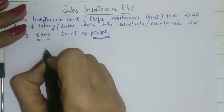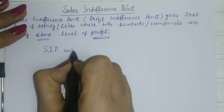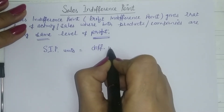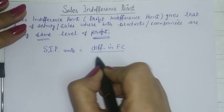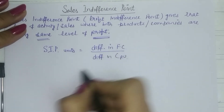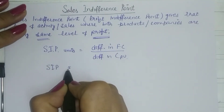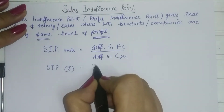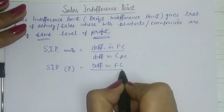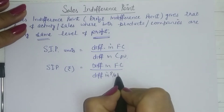The sales indifference point in terms of units is calculated as the difference in fixed cost divided by the difference in contribution per unit. If we want to calculate it in terms of rupees — that is, sales value — then it is the difference in fixed cost divided by the difference in PV ratio (profit volume ratio).